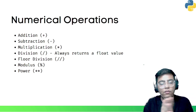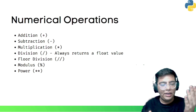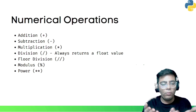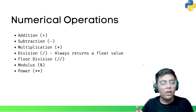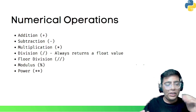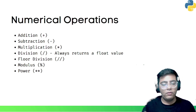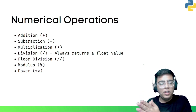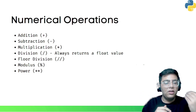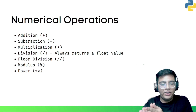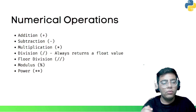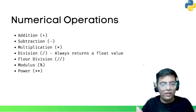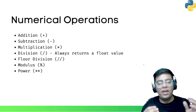Division is a special case where the answer you receive is always a float value. So if you divide 11 by 5, the answer should be 2.2. In C++, however, when you divide something you would always receive an integer answer, and since 2.2 is not an integer you would receive 2.